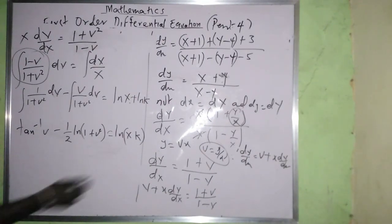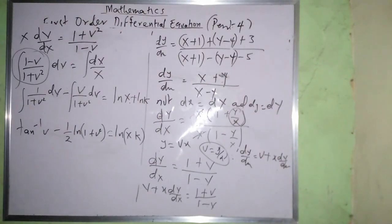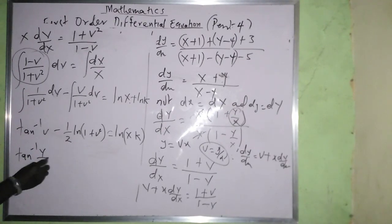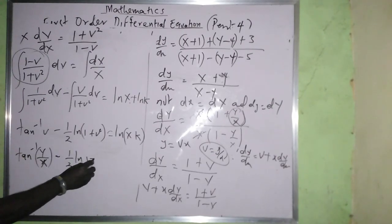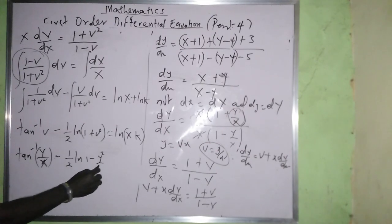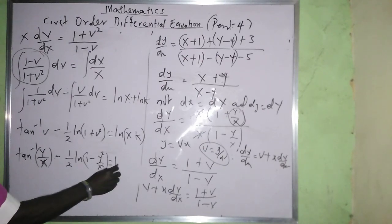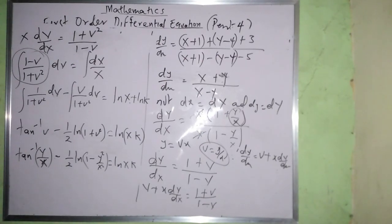Substituting back v = Y/X: tan⁻¹(Y/X) − (1/2)ln(1 + Y²/X²) = ln(Xk). This can be written as tan⁻¹(Y/X) − (1/2)ln((X² + Y²)/X²) = ln(Xk).